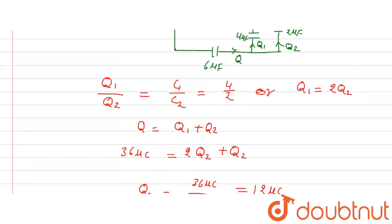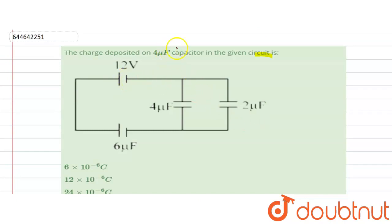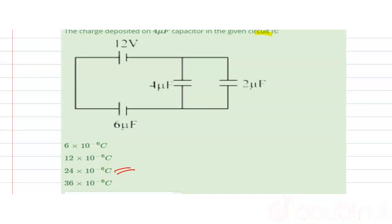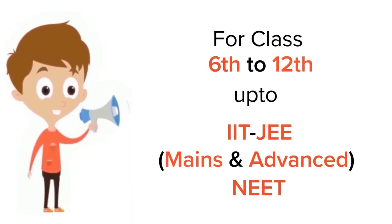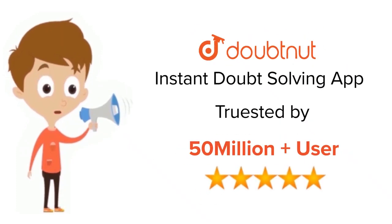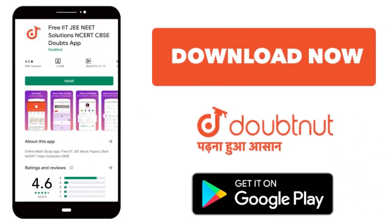So the charge deposited on the 4 microfarad capacitor is 24 × 10⁻⁶ coulomb, which means the third option is correct. This is the solution. Thank you. For class 6 to 12, IIT JEE and NEET level — trusted by more than 5 crore students. Download DoubtNet app today.